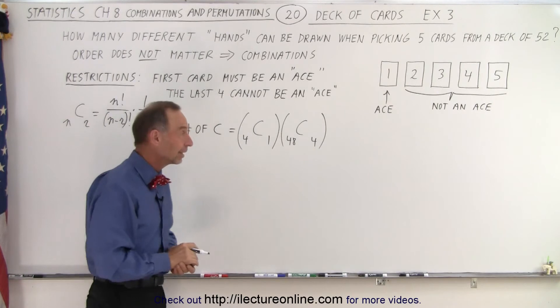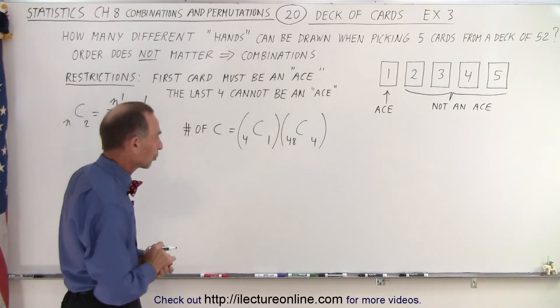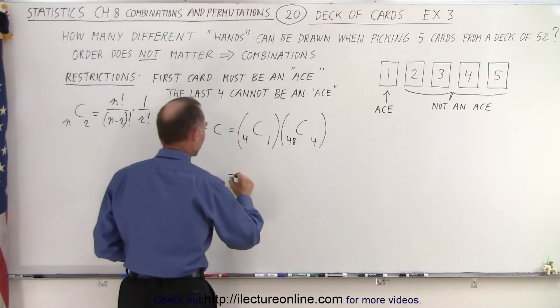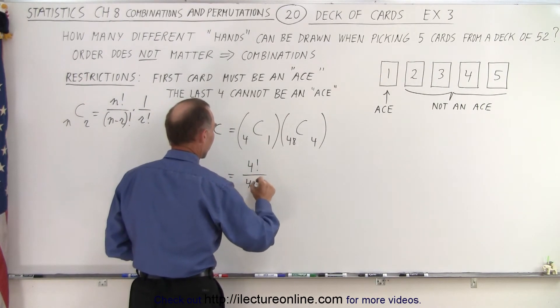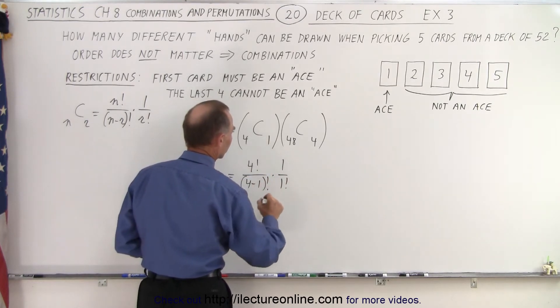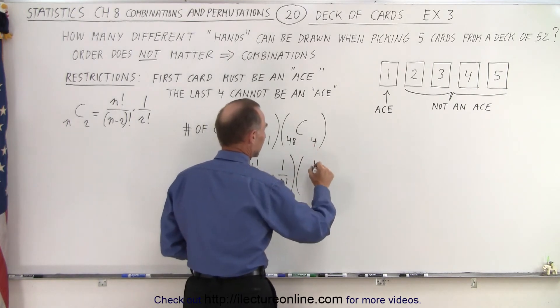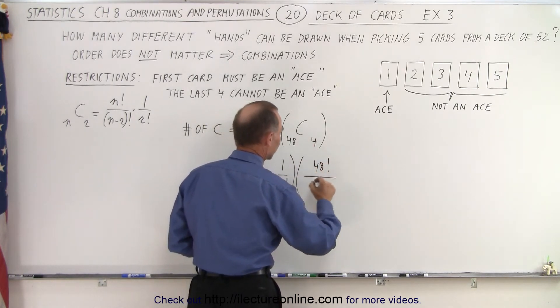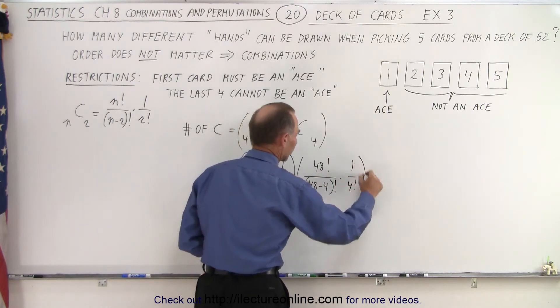So that's going to be the result giving us the number of combinations of the hands that we can have with those restrictions. So this is going to be equal to 4 factorial divided by (4 minus 1) factorial times 1 over 1 factorial, and we multiply that times 48 factorial divided by (48 minus 4) factorial times 1 over 4 factorial.